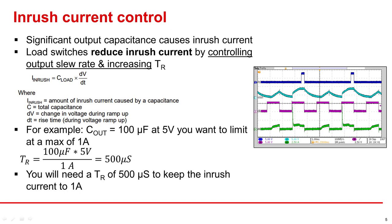An example of how this works is let's say your output capacitance is 100 microfarads, your input voltage is 5 volts, but you want a max of 1 amp of inrush current. With the inrush current calculation, you can find your required rise time to prevent your current from exceeding 1 amp.